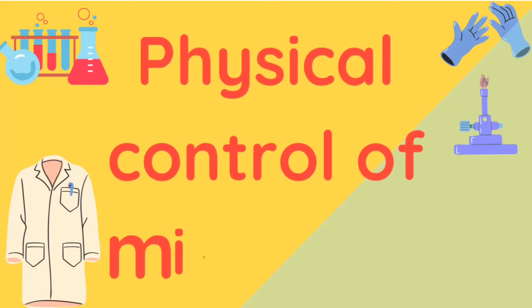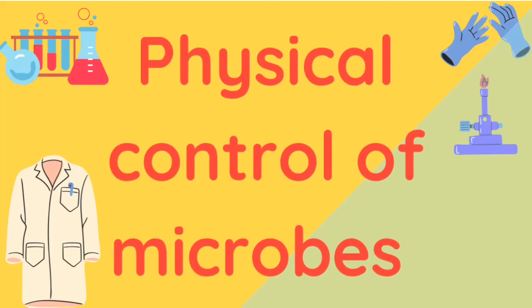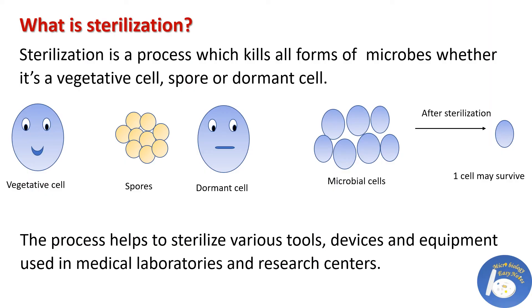Hello everyone, welcome back to my channel Microbiology Easy Notes. Today we are going to discuss physical control of microbes in microbiology labs, research institutes, and medical facilities. First, understand what is sterilization. Sterilization is a process which kills all forms of microbes, whether it's a vegetative cell, spore cell, or dormant cell.